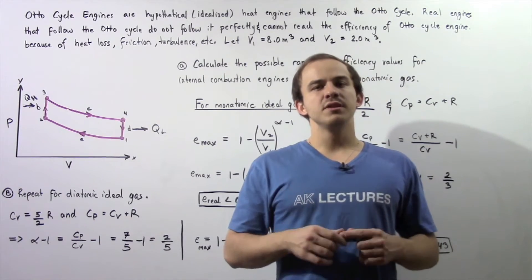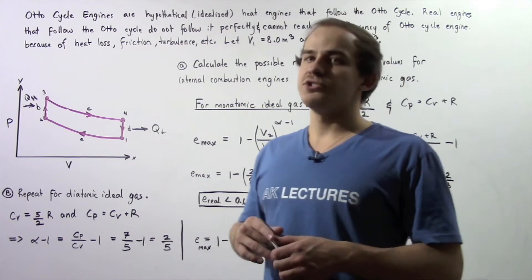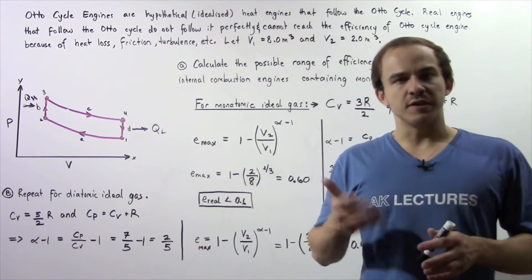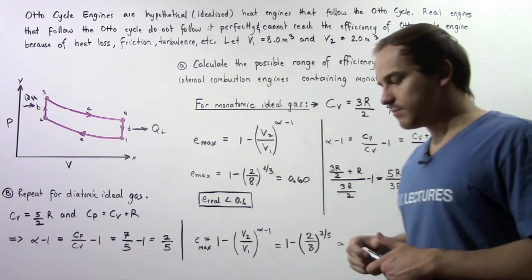So let's look at the following example that will deal with the Otto cycle. Otto cycle engines are essentially hypothetical or idealized versions of heat engines that follow a reversible cycle known as the Otto cycle.